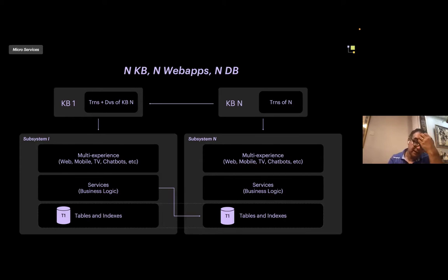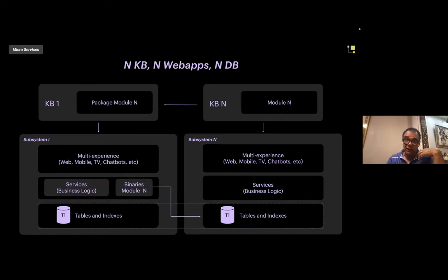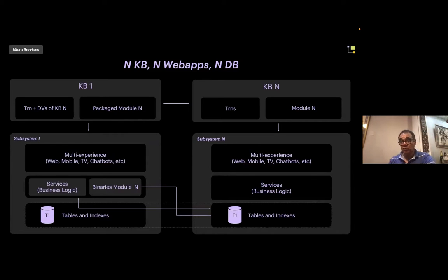When you have exported transactions, you can have all the tables extended and made available in KB1, because you have the data module of KB1 plus all the other KBs. An alternative is to build a package module in KBN, export it, and import it into KB1. What you have in that case is a module with a procedure that allows you to work on data in KBN, but you will not have a join — you cannot access transactions defined in KBN because they are in different modules. It's an alternative.